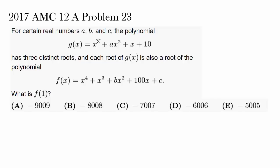Let's try out this pretty recent question: Problem 23 from 2017 AMC 12A. For certain real numbers A, B, and C — so it's not telling us they are integers, not rational, not complex, it's telling us they are real. It's always good to make sure we know what our constraint is, because the problem usually changes dramatically if we are dealing with real numbers, rational numbers, integers, or complex numbers.